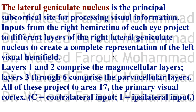The lateral geniculate nucleus has six main layers. Layers one and two are the magnocellular layers (large cells). Layers three through six comprise the parvocellular layers (small cells). It is the principal site for processing visual information. For example, the right hemiretina of each eye projects to different layers of the right lateral geniculate nucleus to create a complete representation of the left visual hemifield.